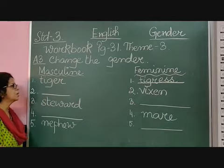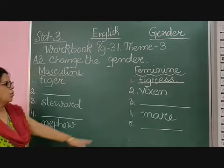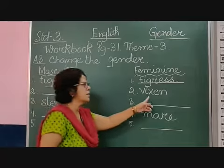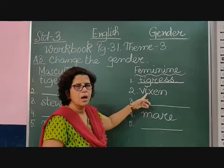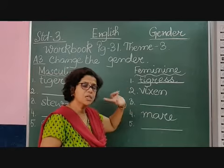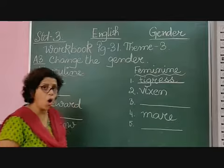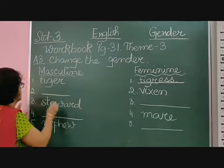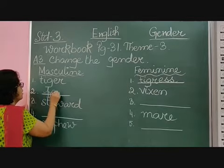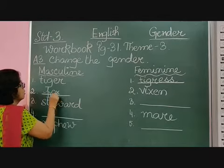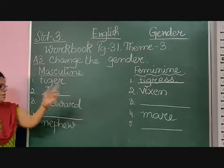Number two: here, masculine is not given — only feminine is given, and it is written 'vixen'. Now, you remember vixen? The masculine is fox. We have already done it — fox and vixen.